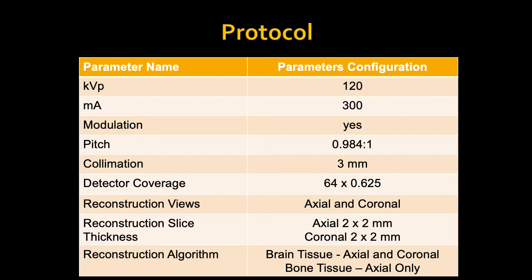At 140 kVp we will miss those subtle early signs of acute stroke and thus be unable to determine whether a patient is having a stroke. You would always want to use 300 mA. Some people like to use modulation, some don't — it is preferred not to use it, however you can.